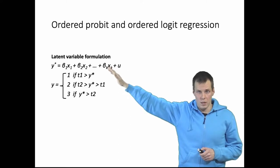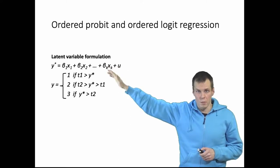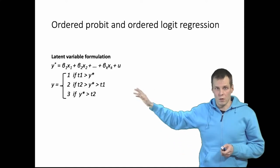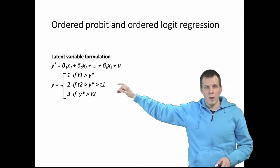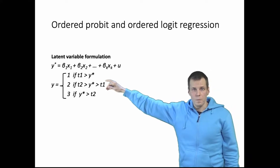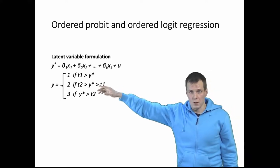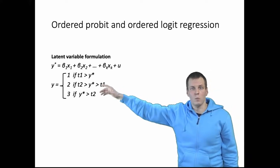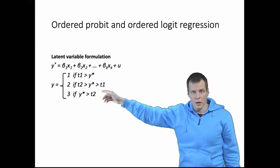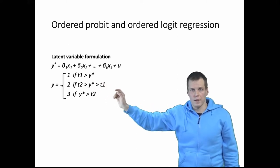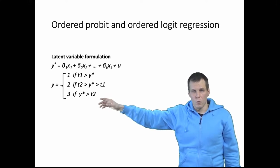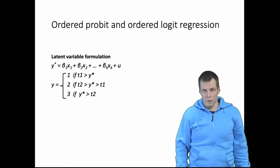Note that there is no intercept here — an intercept is not estimated in these models. Then we have two thresholds. If the latent variable y* is smaller than the first threshold, then y receives a value of one. If the latent variable is between thresholds one and two, then y receives value two. And if the latent variable is greater than threshold two, then y receives a value of three.